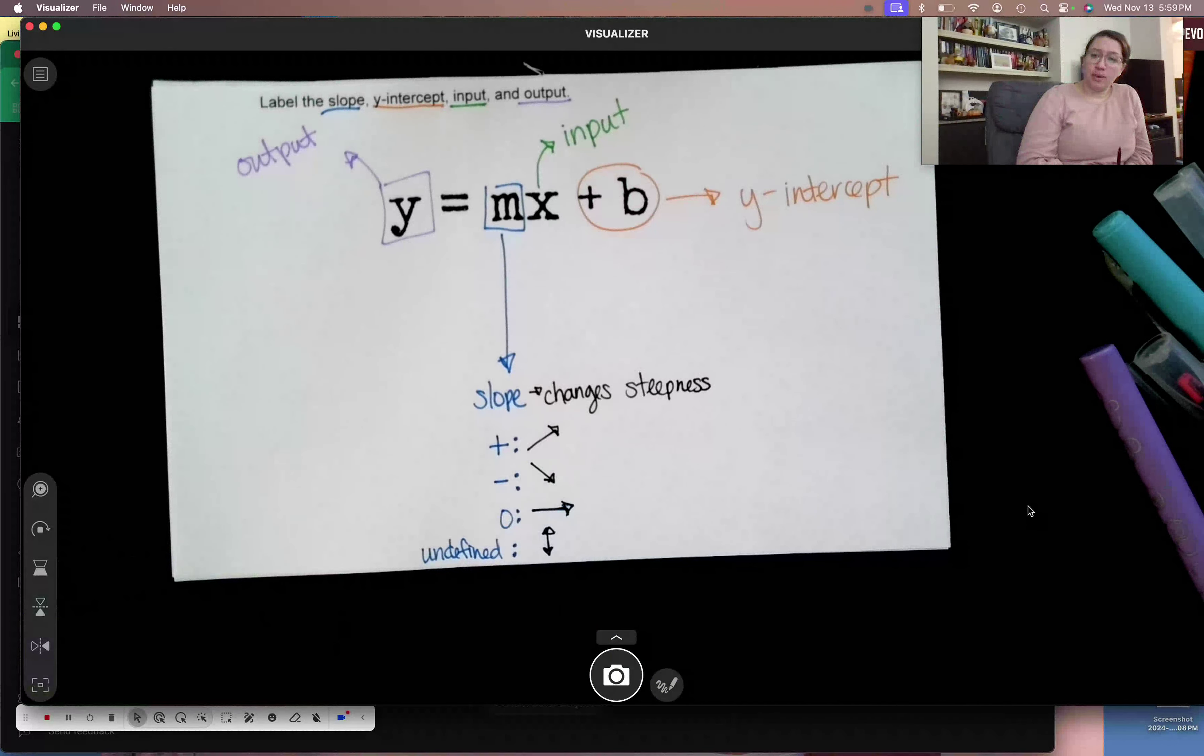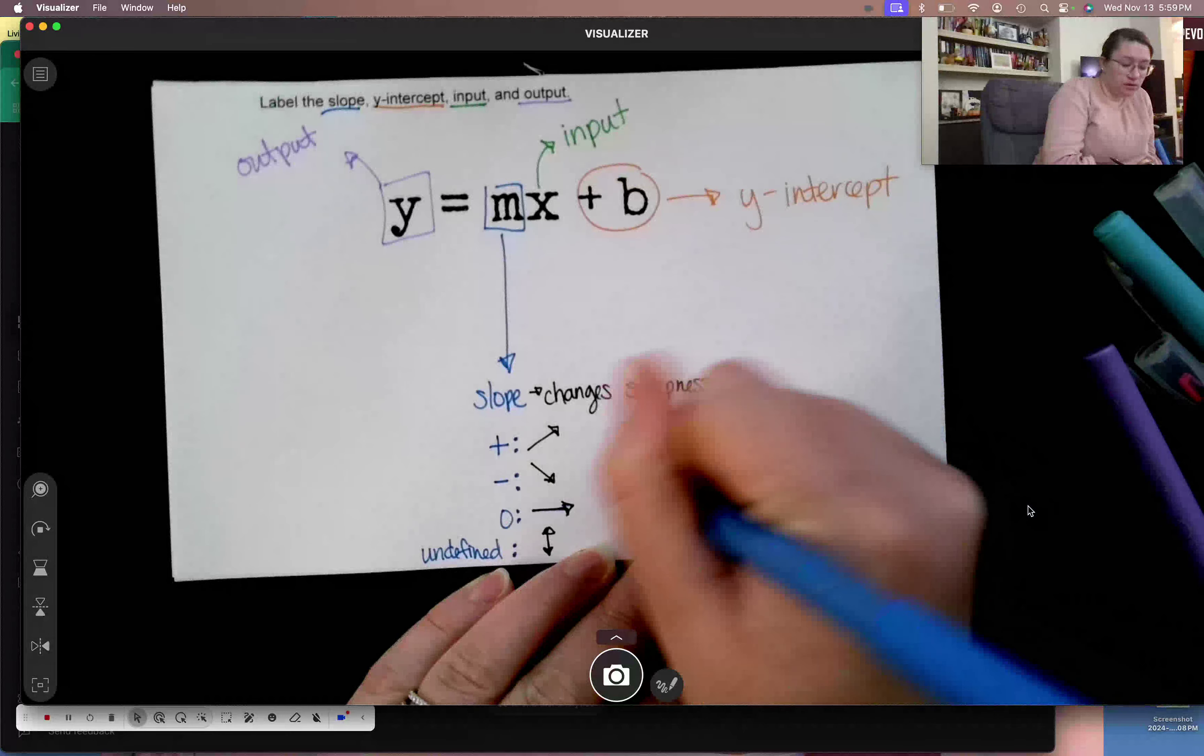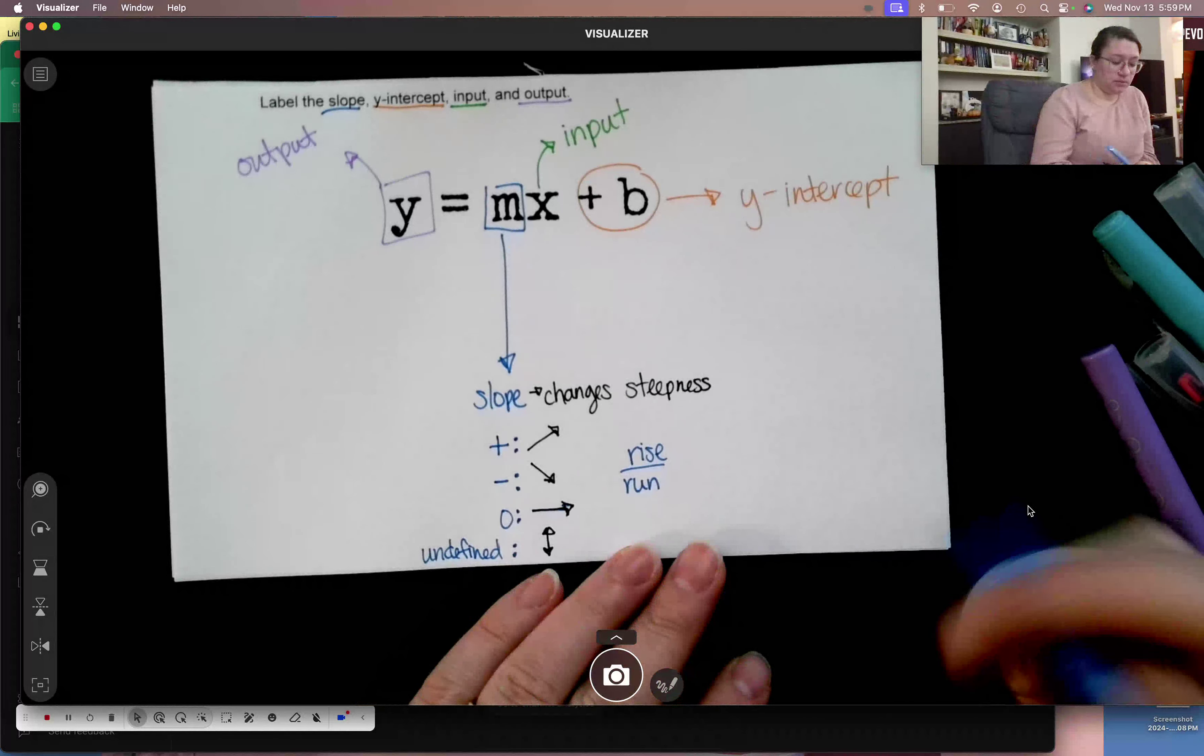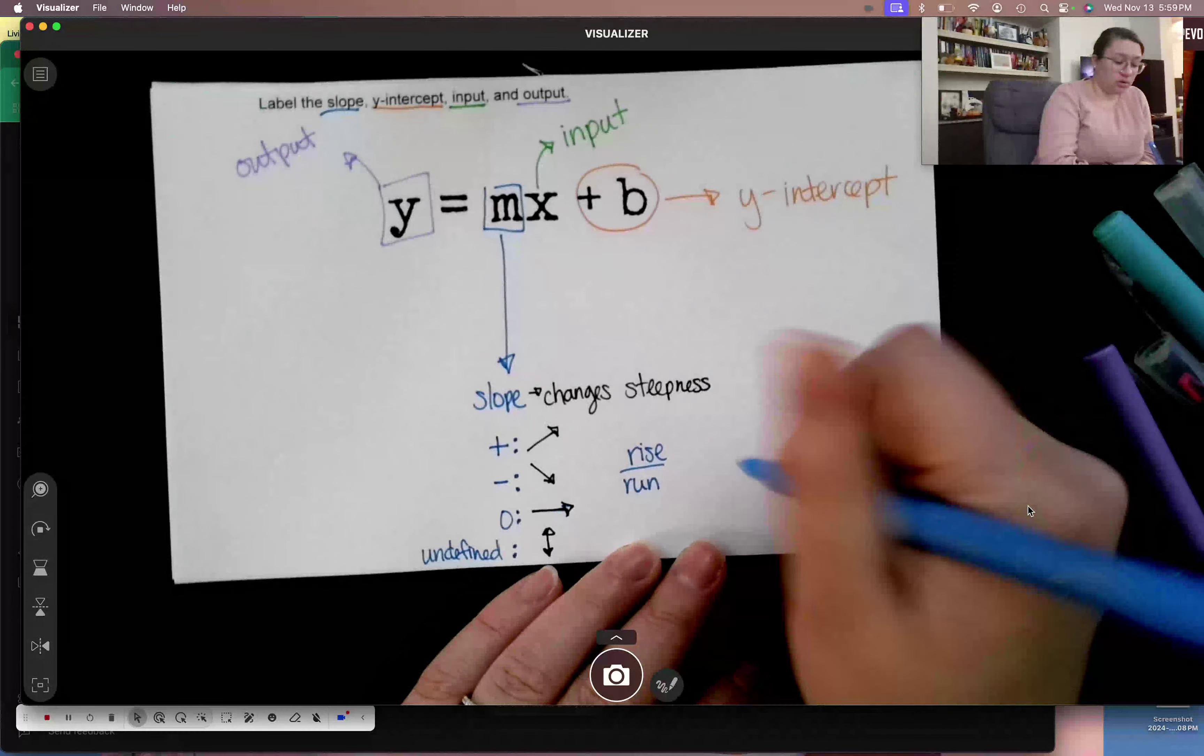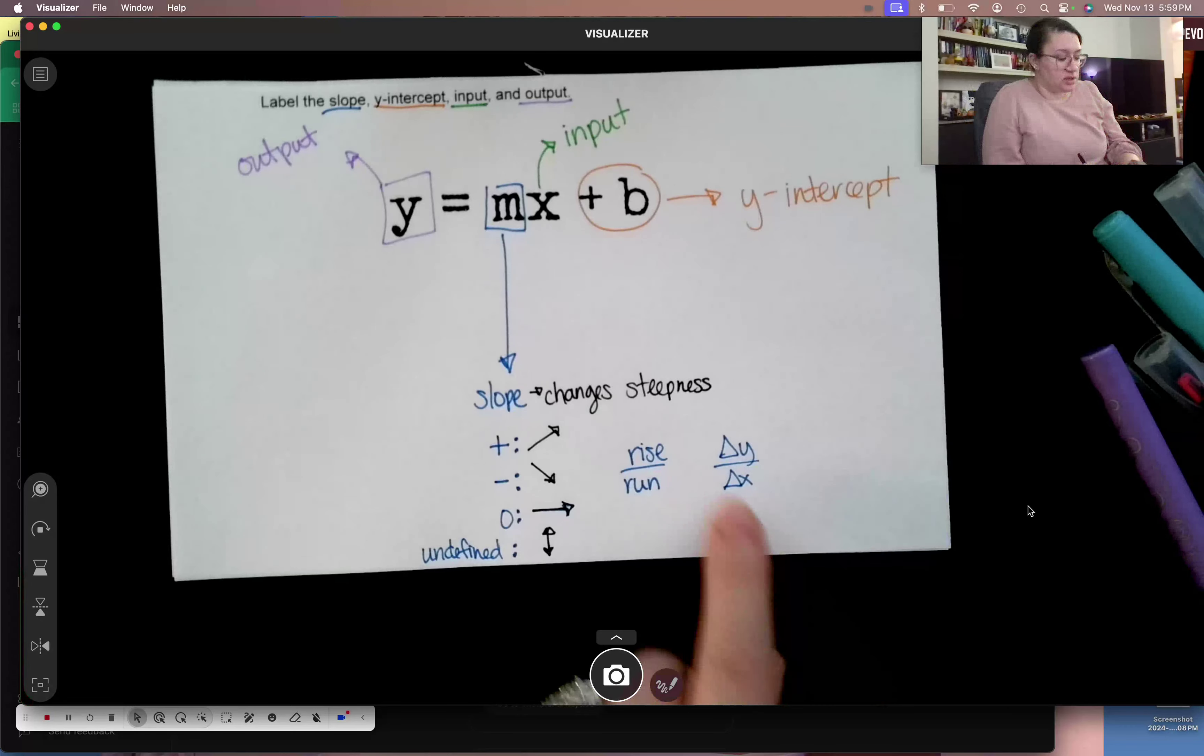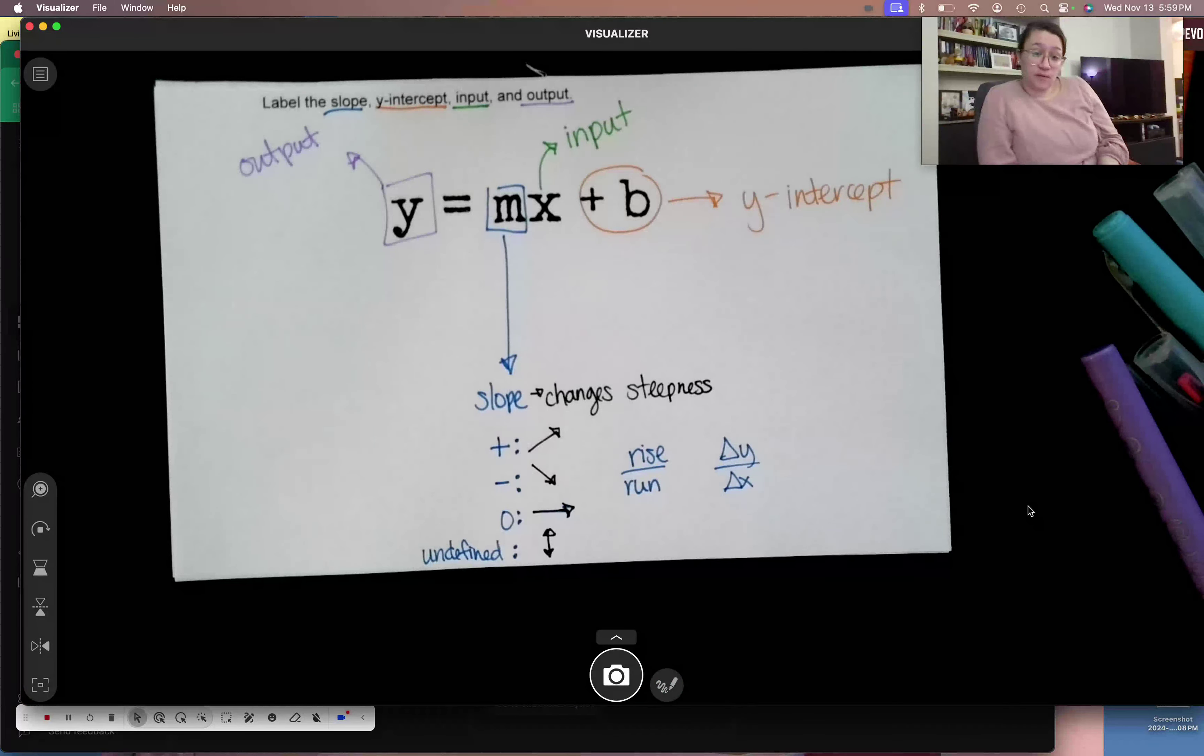How do I find slope on a graph? You hear rise over run a lot between two pretty points, and we'll get to that. For slope, we hear rise over run. If I have points or if I have a table, we're going to talk about delta y over delta x. That was one of the things on the pre-test that we did not do too hot on, was finding slope given a table. So that's what we're going to focus on for slope.